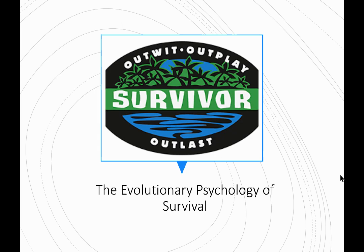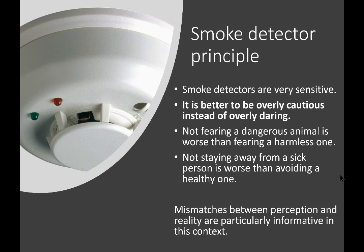Let's think about the evolutionary psychology of survival. We'll talk about the smoke detector principle. Smoke detectors are very sensitive — you might argue they are more sensitive than they need to be to detect a fire in a home or workplace. However, it is better to be overly cautious instead of overly daring. In a historical, evolutionary context, not fearing an animal is worse than fearing a harmless one. So humans would have a tendency to being cautious towards unknown animals. Not staying away from a sick person is worse than avoiding a healthy one, and so we might expect extra caution here.